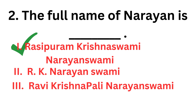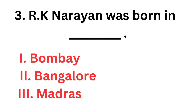The full name of R.K. Narayan is Rasipuram Krishnaswami Narayan Swami. Third question: R.K. Narayan was born in Bombay, Bangalore, or Madras? The correct answer is Madras.